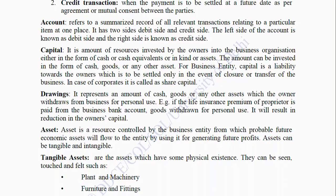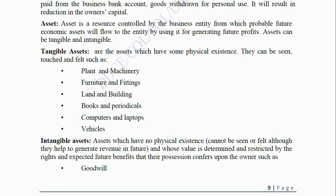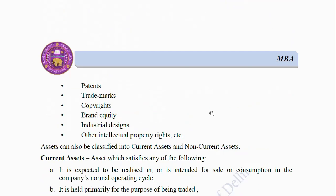Asset: An asset is a resource controlled by the business entity from which probable future economic benefits will flow to the entity by using it for generating future profits. Assets can be tangible and intangible. Tangible assets have physical existence — they can be seen, touched and felt — such as plant and machinery, furniture and fittings, land and building, computers and laptops, and vehicles. Intangible assets have no physical existence but help to generate revenue in future, such as goodwill, patents, trademarks, copyrights, brand equity, industrial designs and other intellectual property rights.